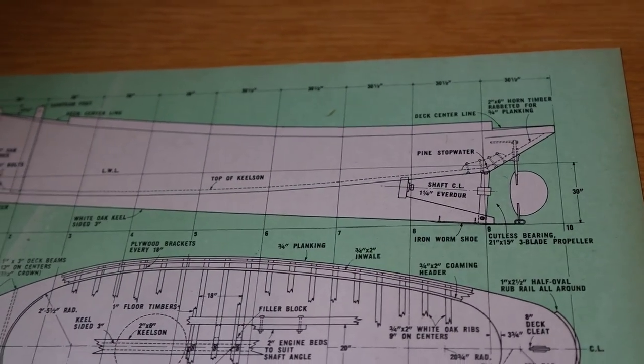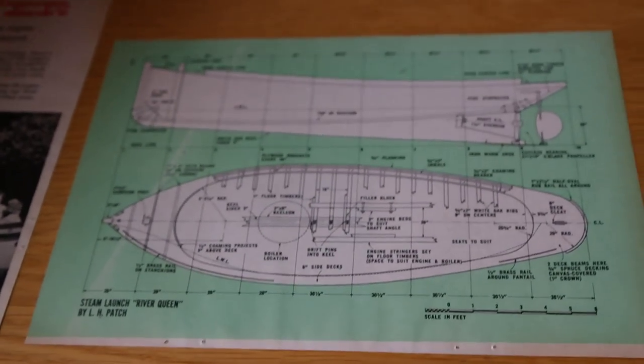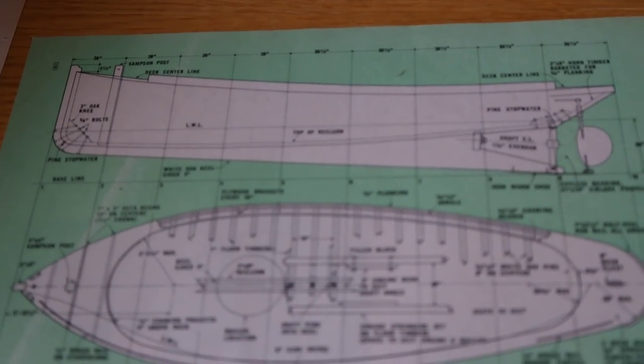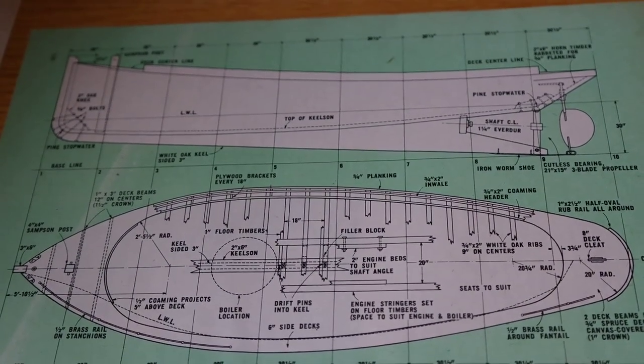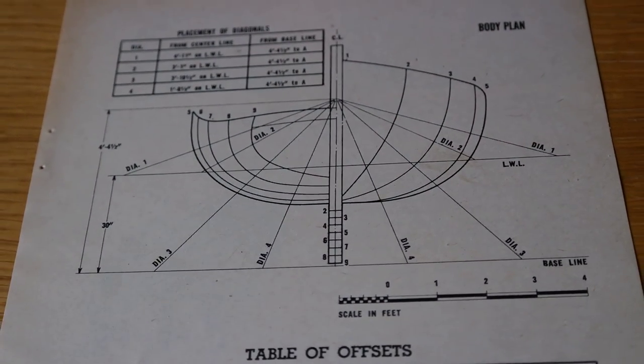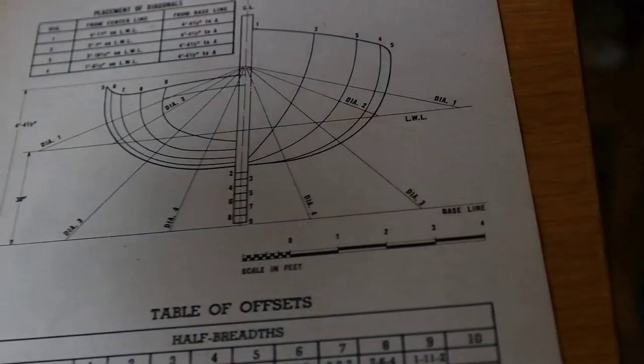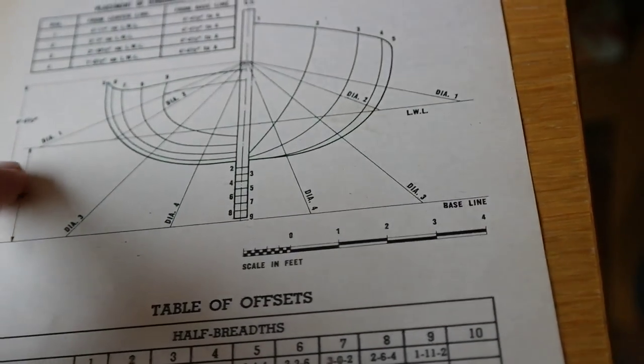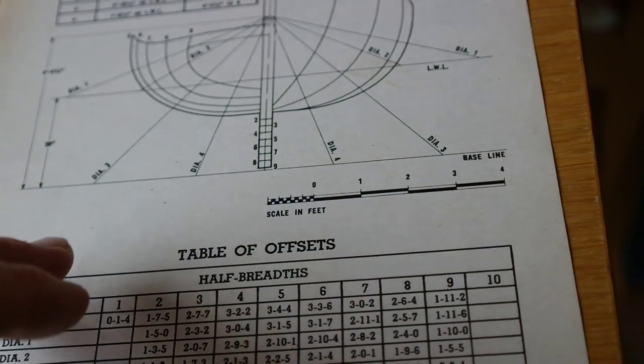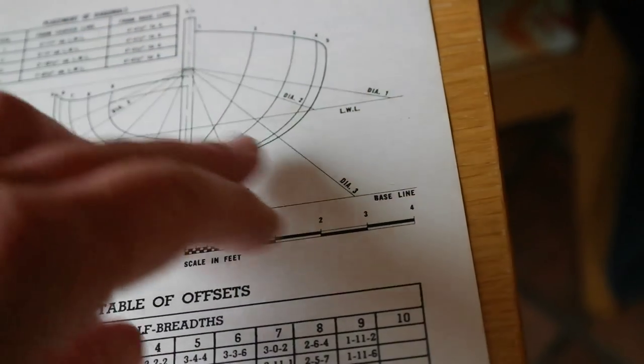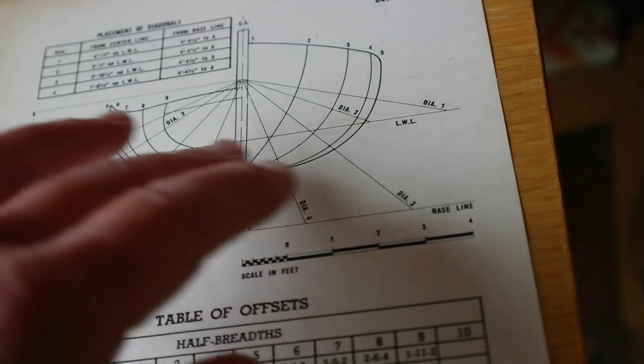So I would think that we would do a plank on frame for that. There's another look at the offsets. So with the offsets, we've got the general arrangement of the plan. We've got the basic water line here. And we've got the offsets and the shear to show us the shape of the hull that we want to achieve from the plan.